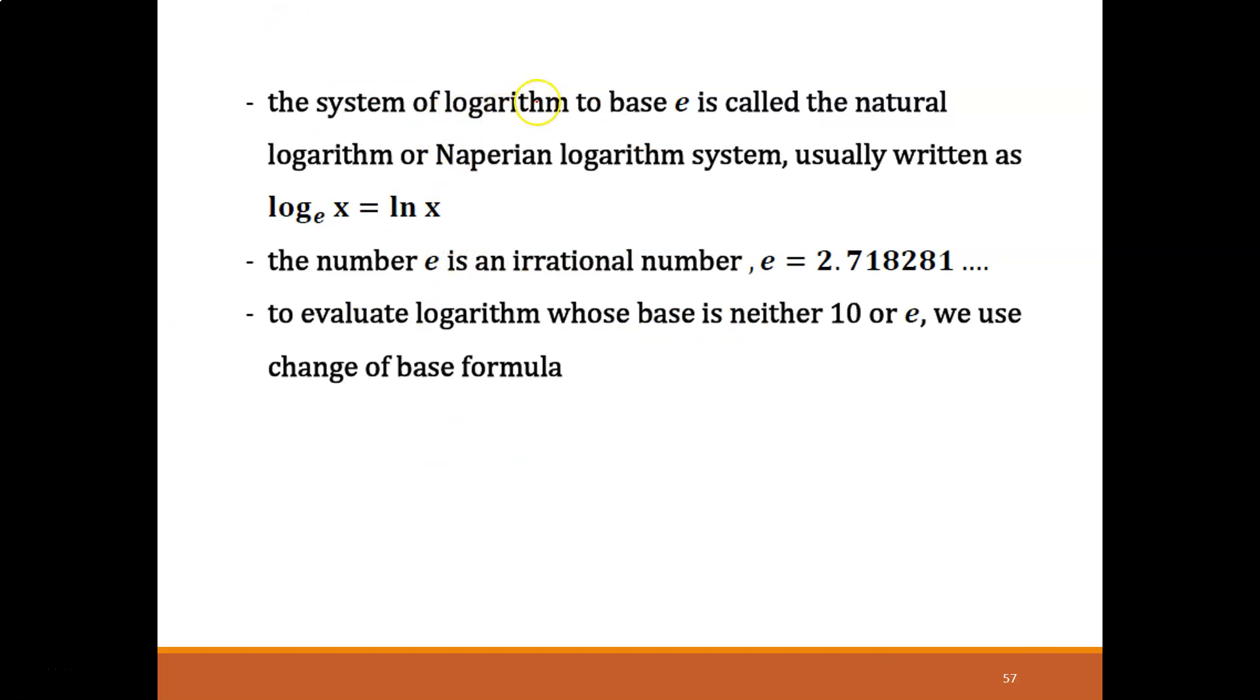The system of logarithm to base e is called the natural logarithm system, usually written as ln x. Usually we have log base 10, or we call it log only. But this one has log base e. So when you have log base e, it is actually equal to ln x. The ln x that you find in your calculator is actually log to the base e, where e is an irrational number equal to this value.